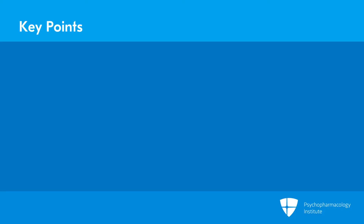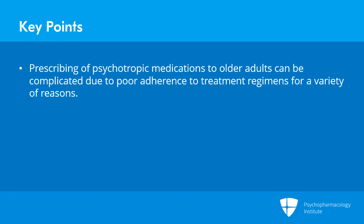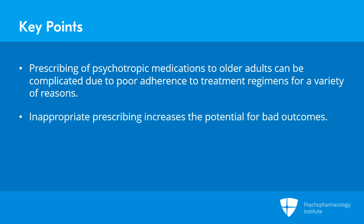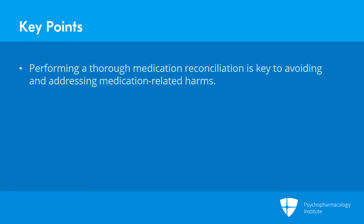The key points for this section: prescribing of psychotropic medications to older adults can be complicated by poor adherence to treatment regimens due to either impaired cognition, confusing drug regimens, or a lack of motivation or insight. Inappropriate prescribing increases the potential for bad outcomes, including increased risk of emergency department visits, hospitalizations, adverse drug events, and poor quality of life. Doing a thorough medication reconciliation is key to avoiding and addressing medication-related harms.